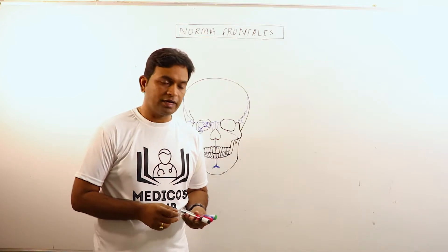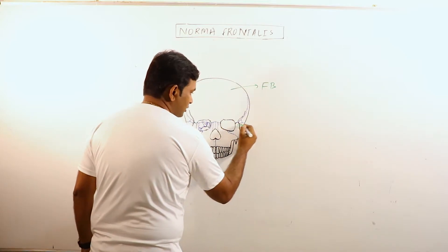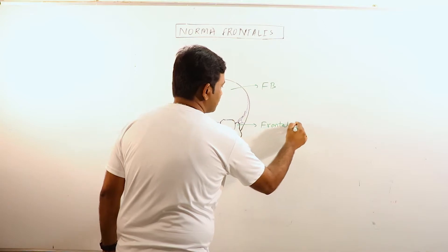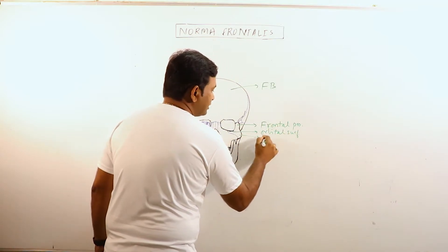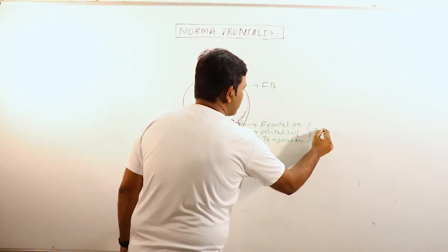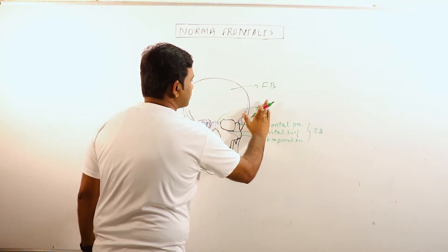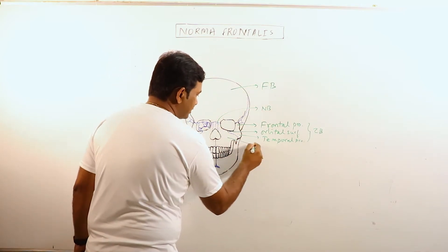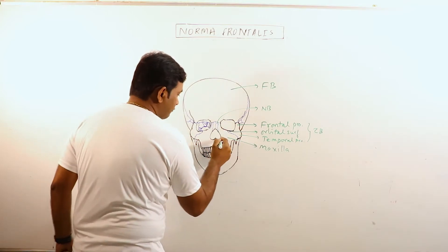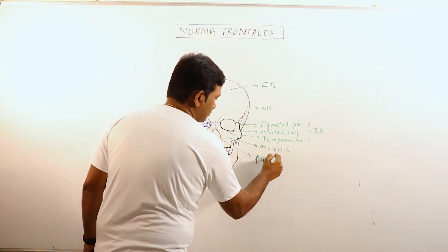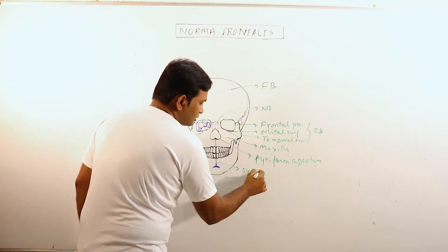When we view the skull from front it is known as Norma frontalis. This is the frontal bone, this is the frontal process of zygomatic bone, this is the orbital surface of zygomatic bone, and this is the temporal process of zygomatic bone. Now these are the two nasal bones, and this is the maxillary bone or maxilla. This pyriform area is known as the pyriform aperture. This is symphysis menti.